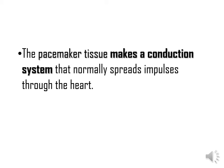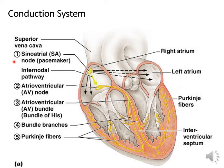The pacemaker tissue makes a conduction system that helps spread the impulses from the pacemaker tissue to various parts of the heart. In a normal human heart, the SA node, or the sinoatrial node, functions as the primary pacemaker. Apart from this, there are other tissues like the AV node, bundle of His, and Purkinje fibers, which also have pacemaker activity. But in normal conditions, the rate of impulses discharged from the SA node is higher than that of the other tissues.